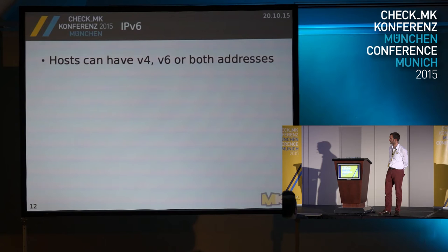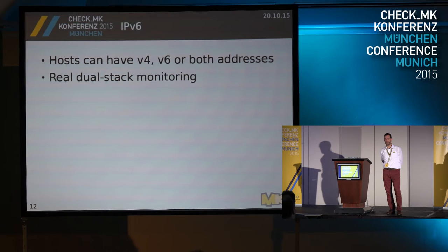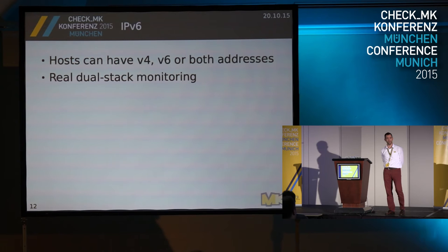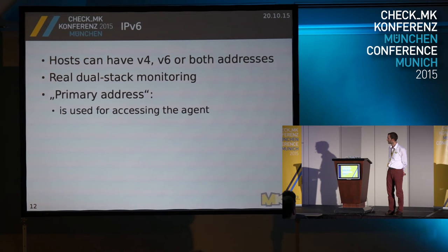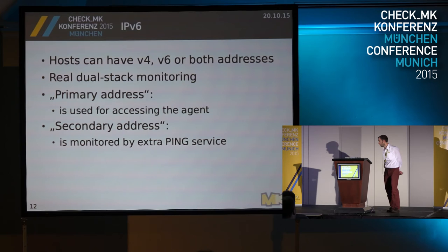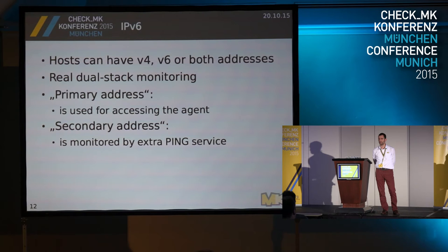Hosts usually have not just IPv6 — in many cases they have both addresses. If a host has both addresses, we have the concept of setting a primary address on which the Check MK agent is polled, and then the second address is checked by a ping to make sure it's still accessible in the other address pool. Which one is primary and which is secondary can be set by a rule. At the host itself, you have a rule saying I am IPv6, I am IPv4, or I am both — the policy for which one should be monitored can be controlled separately.